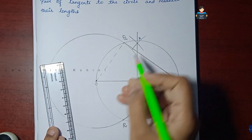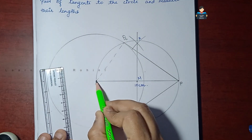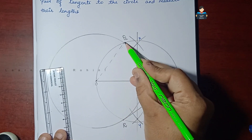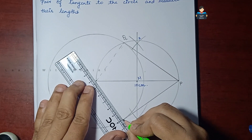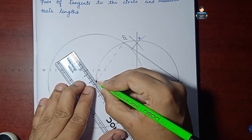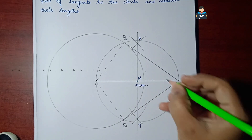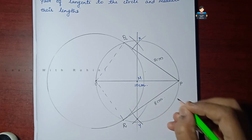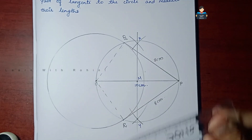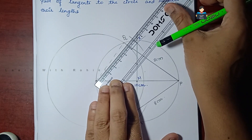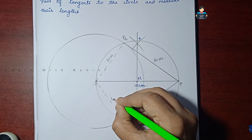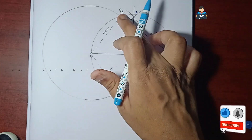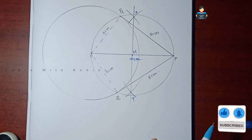So PQ and PR join. This is the radius — OQ is the radius, and the center point of the circle is touched. Now we measure PQ is 8 cm. So PQ and PR are our tangents.